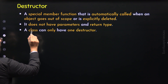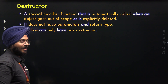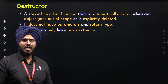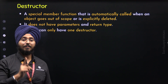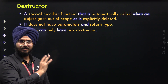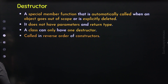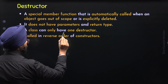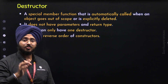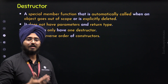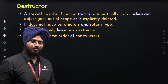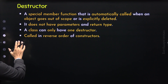The third point is a class can only have one destructor — we can only have one destructor per class. This is in contrast to constructors; we can define multiple constructors within a class, but there can be only one destructor. The fourth point: it is called in reverse order of constructors. Destructors are always called in reverse order of constructors. This point will be clear when we discuss an example C++ program.